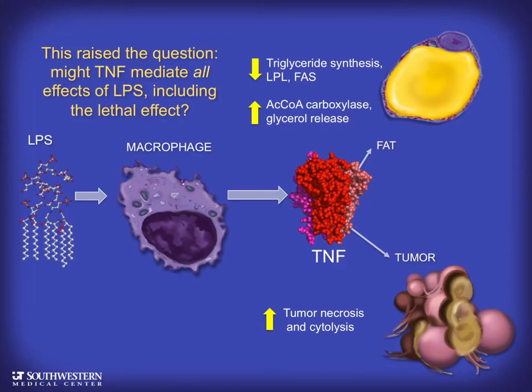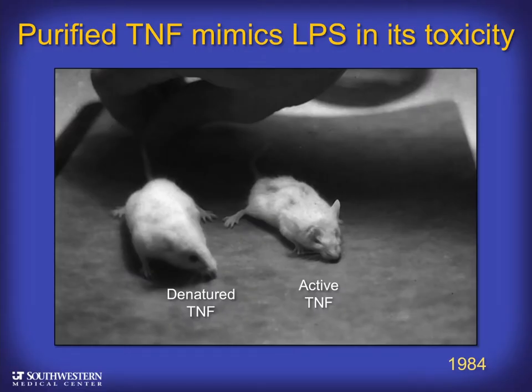This was extremely exciting — one factor, strongly induced by LPS, had very different biological activities: acting on adipocytes to suppress fat storage on one hand, and killing tumor cells on the other. I began to wonder if this factor might be the central endogenous mediator of endotoxic shock — perhaps mediating all the effects of LPS, including the lethal effect. When I had sufficient material to give to mice, about 20 micrograms of TNF could kill a mouse looking very much like an endotoxin-poisoned animal, though no endotoxin had been given.